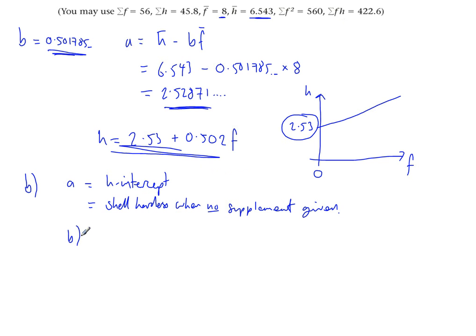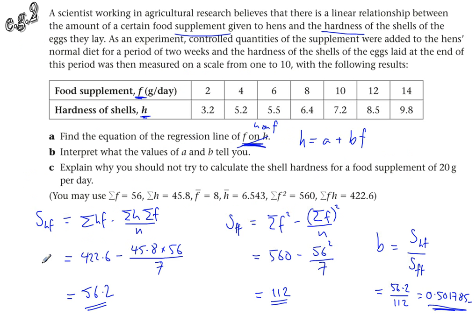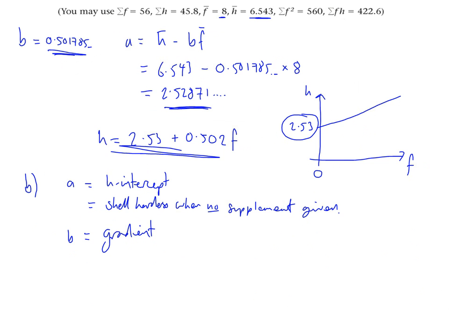B is the gradient. It tells me how much my hardness is increasing as I increase the food supplement. We'll take a look at the units. The food supplement is in grams per day, and the hardness, well we don't know. For an increase of 1 gram per day, the increase in hardness would be 0.502. So we'll describe it as the increase in hardness for a 1 gram increase in the food supplement.